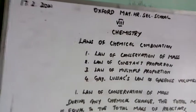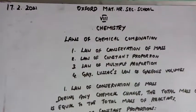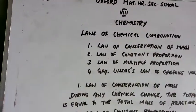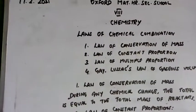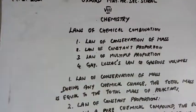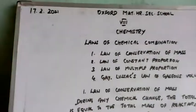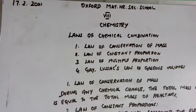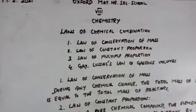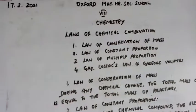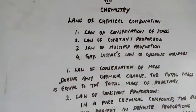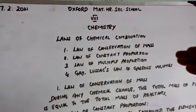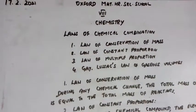Good morning students. Today we will discuss the last topic in atomic structure, that is laws of chemical combination. We know very well that reactions are taking place between various substances, and those reactions are governed by these laws of chemical combination. There are four laws of chemical combination.